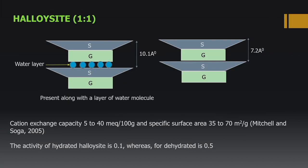Halloysite is also a 1:1 mineral like kaolinite, but with one layer of water molecules present between units, giving a basal spacing of 10.1 angstroms. When the water is removed, the spacing reduces to 7.2 angstroms. The cation exchange capacity is 5–40 meq/100g and specific surface area is 35–70 m²/g. The activity of halloysite is 0.1, whereas for the dehydrated form it is 0.5 — so dehydrated halloysite is more active than the hydrated form.